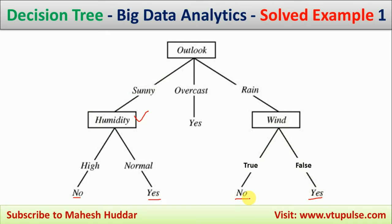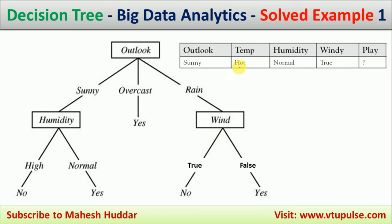We now predict the class label for the new example: outlook = sunny, temperature = hot, humidity = normal, windy = true. Starting at the root node — outlook is sunny, so we go to the sunny branch. The next attribute is humidity, which is normal, so we follow the normal branch. The answer is yes. We only needed to ask two questions: outlook and humidity.